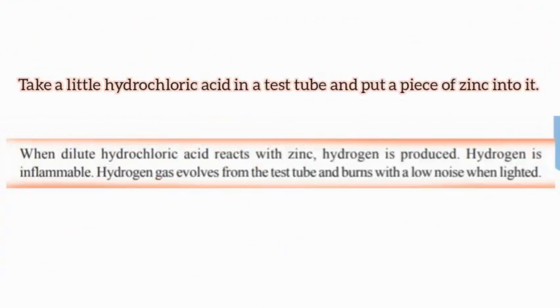Explain the reaction of acids with metals. Take a little dilute hydrochloric acid in a test tube and put a piece of zinc into it. When dilute hydrochloric acid reacts with zinc, hydrogen is produced.